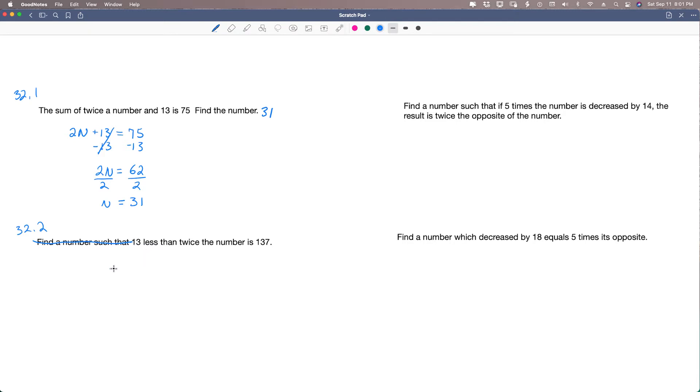13 less, so we're going to be subtracting 13 from something. 13 less than, so we're subtracting it from this. Than tells us that we're subtracting it from this. Twice the number, so 2n is, is our equal sign, 137.